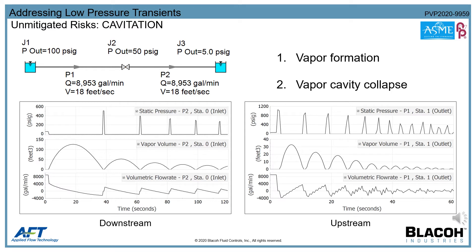A second risk of unmitigated low pressure transients is cavitation. Cavitation is a general term encompassing two effects: first, vapor formation, where liquids vaporize as the system pressure falls below the fluid's vapor pressure; and second, vapor cavity collapse with the returning pressure wave or flow reversal. A collapsed vapor pocket can be an extremely violent high-pressure event, damaging the site of cavitation and propagating additional high-pressure transient waves.